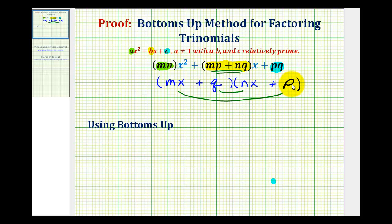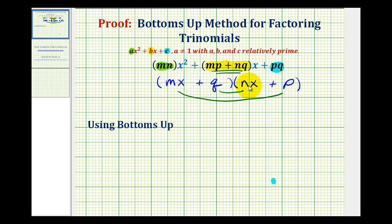Using the factors of pq, we'll use plus q and plus p. Let's check this: the outer product is mpx and the inner product is nqx, giving us the middle term. So this verifies that this trinomial is factorable. Now what we're going to do is factor this using the bottoms-up method and verify that the binomial factors would be the same.